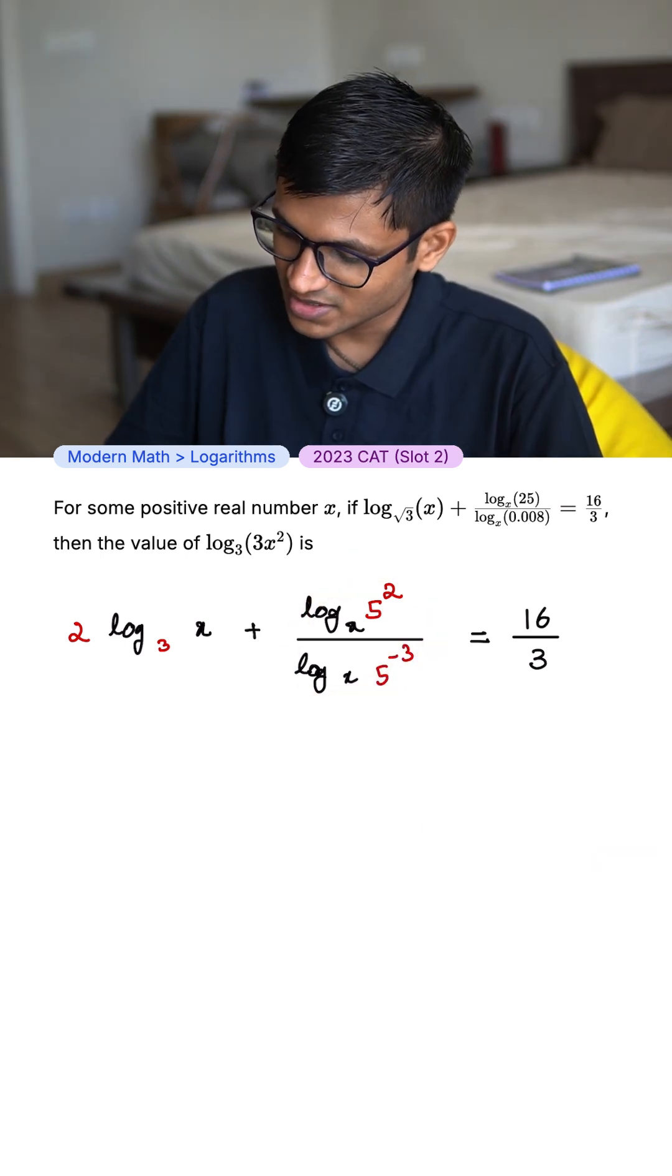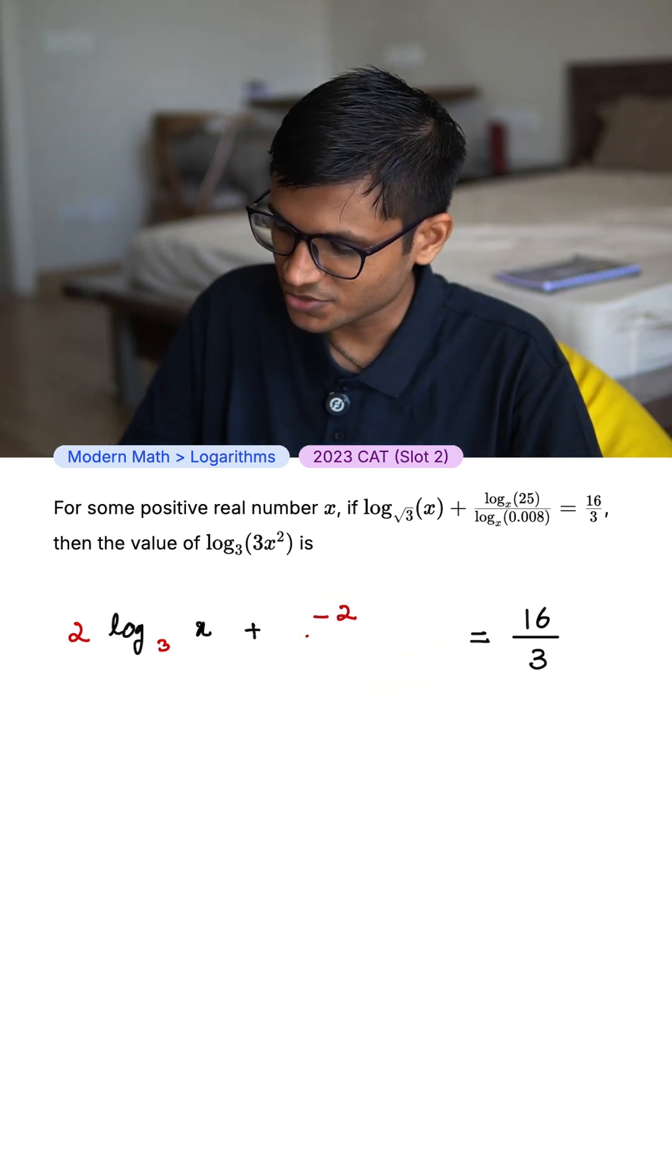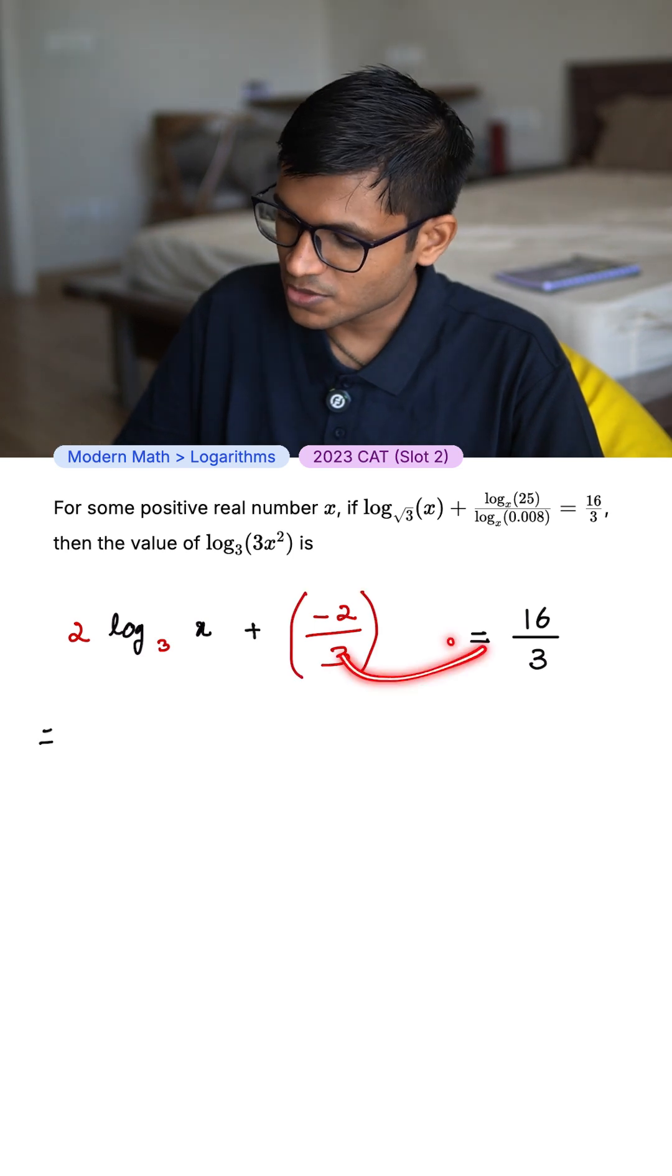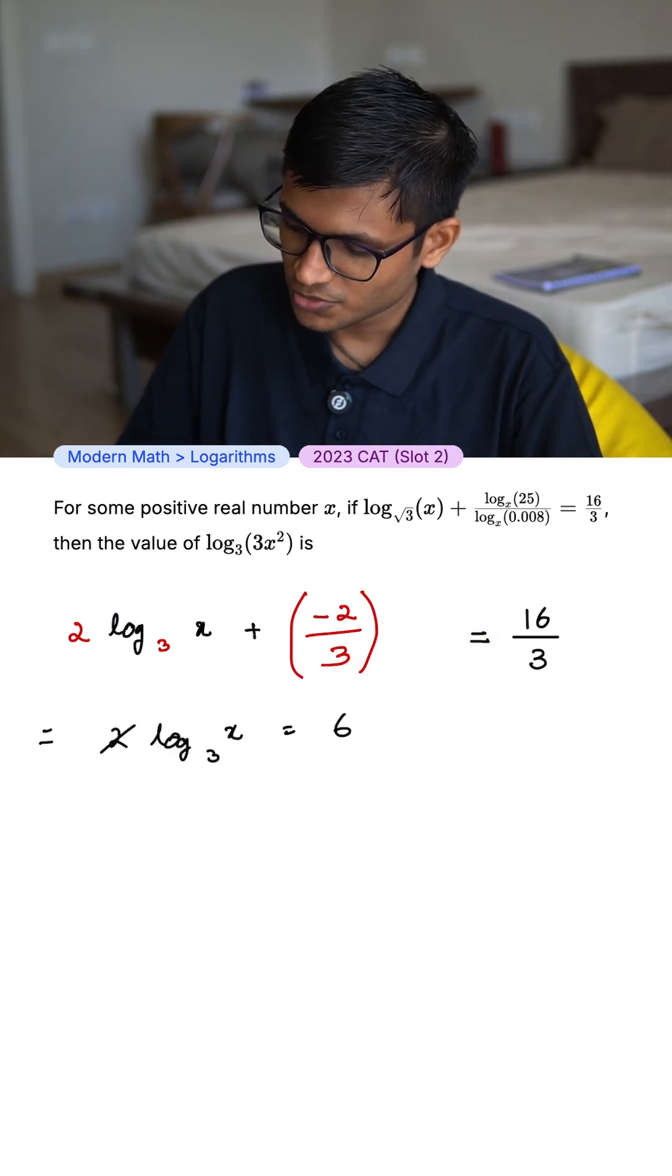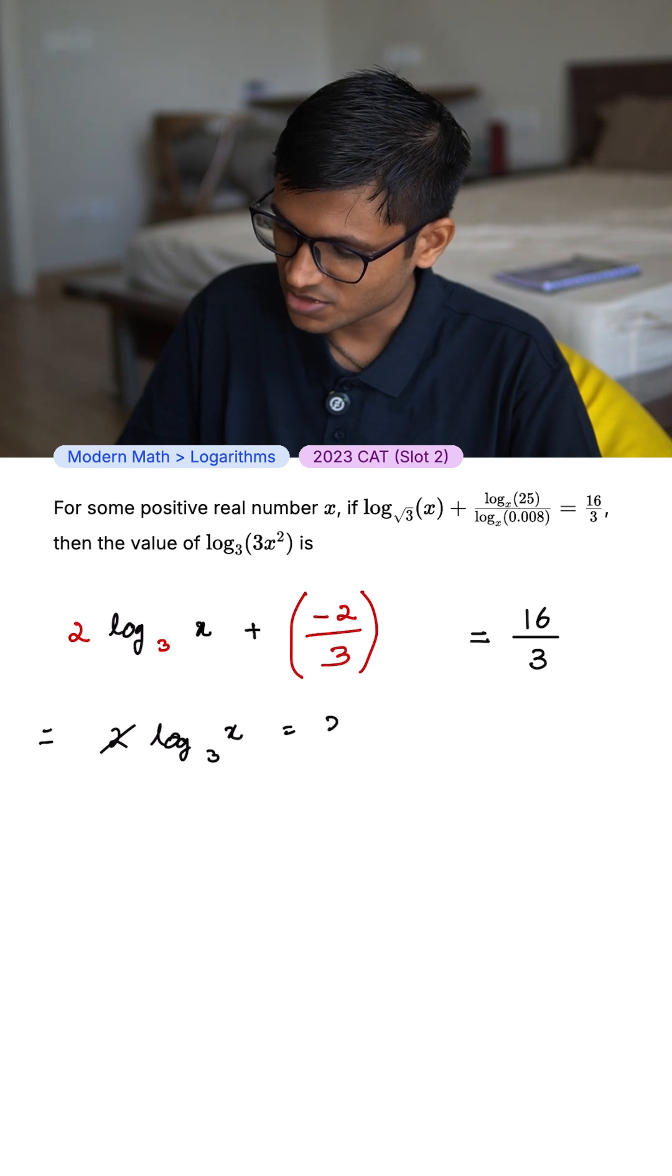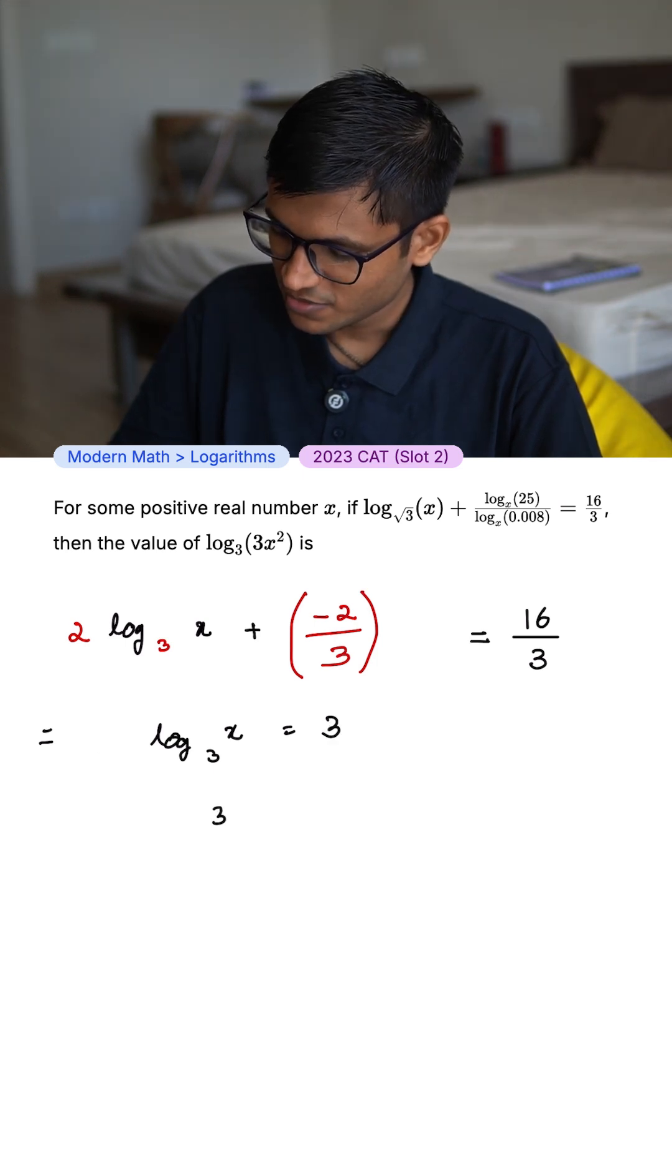In a fraction like this, we can rewrite this entire thing as minus 2 by 3. Sending this to the right hand side, 18 by 3 is nothing but 6. And over here, 2 can get cancelled and 6 becomes a 3. And we finally have 3 to the power 3 equals x.